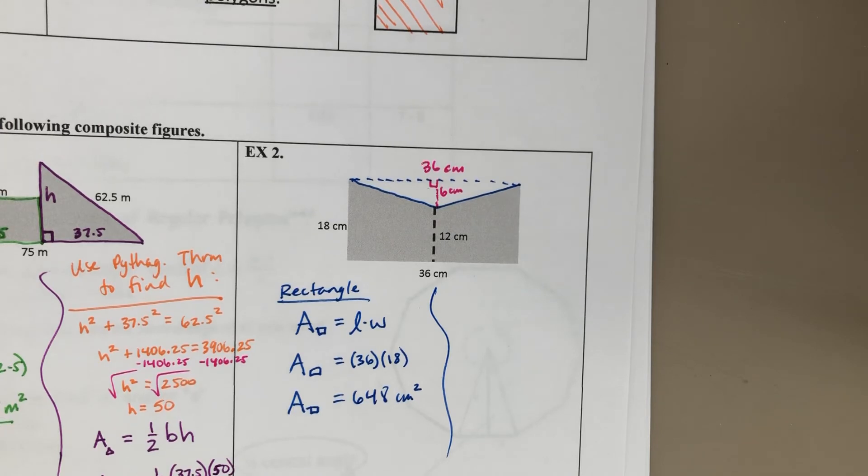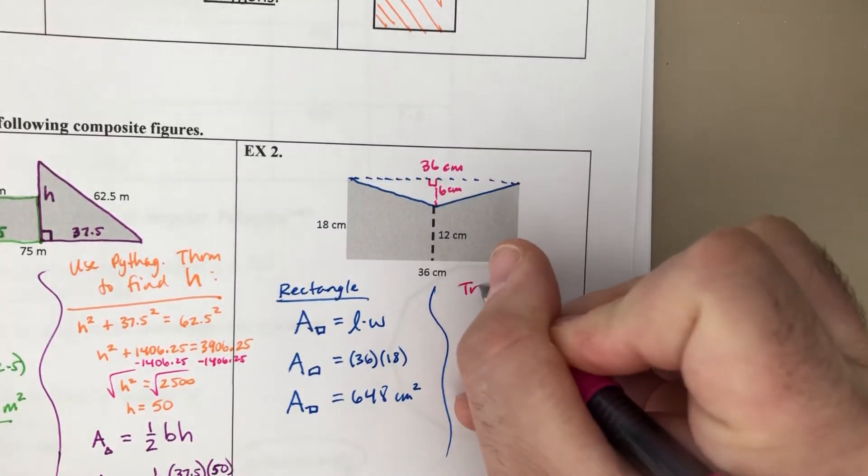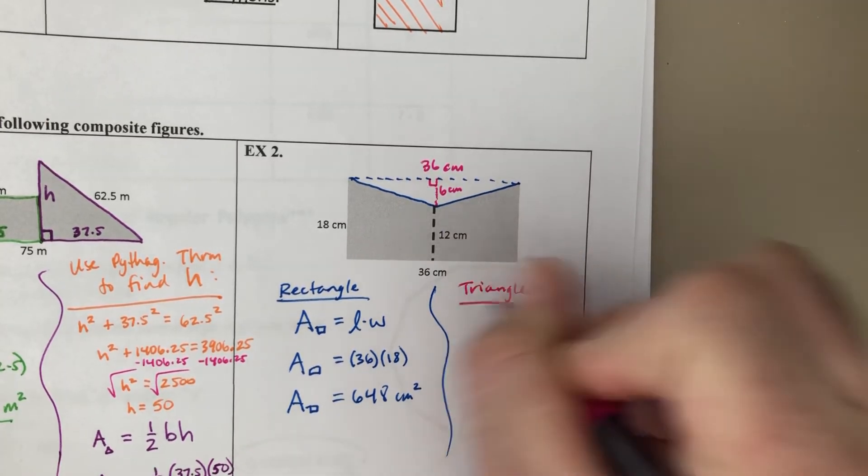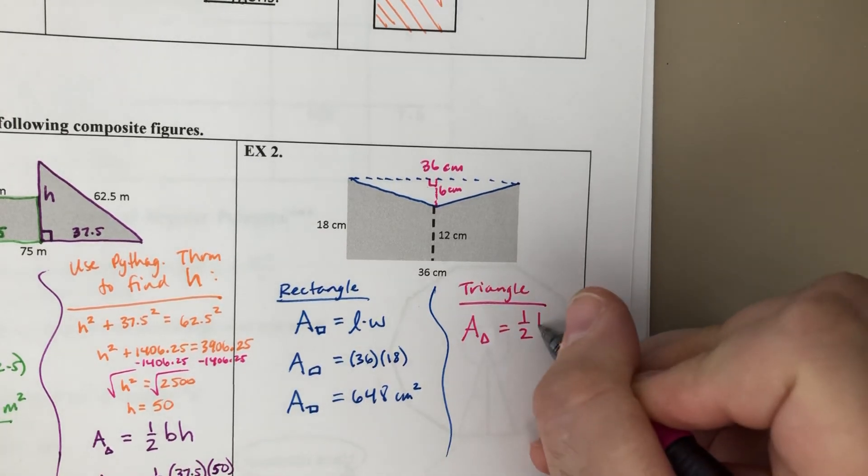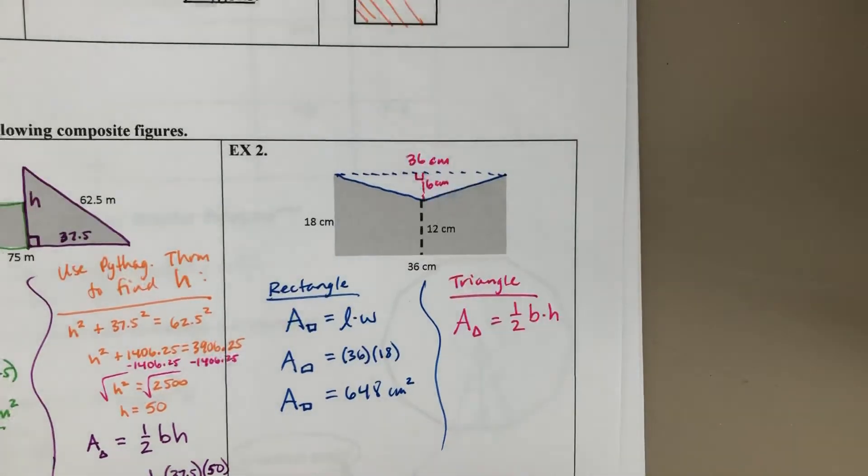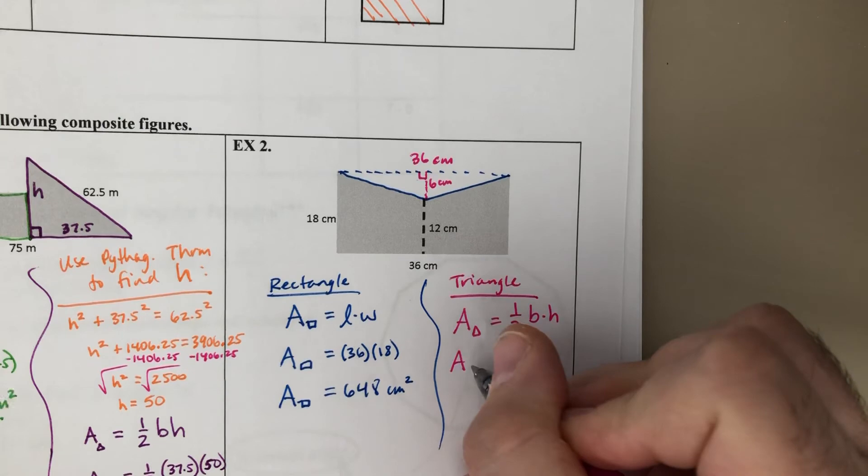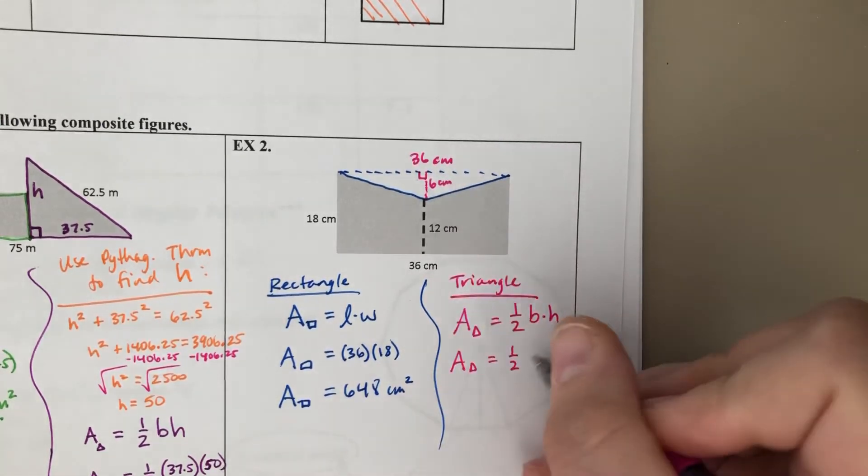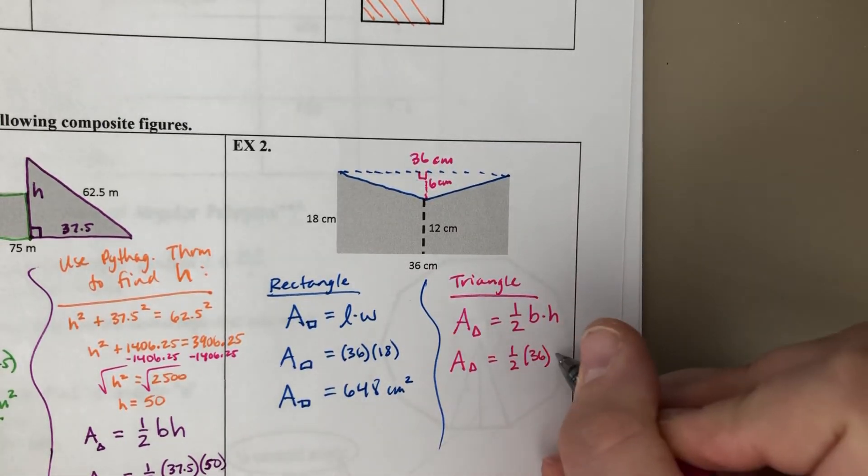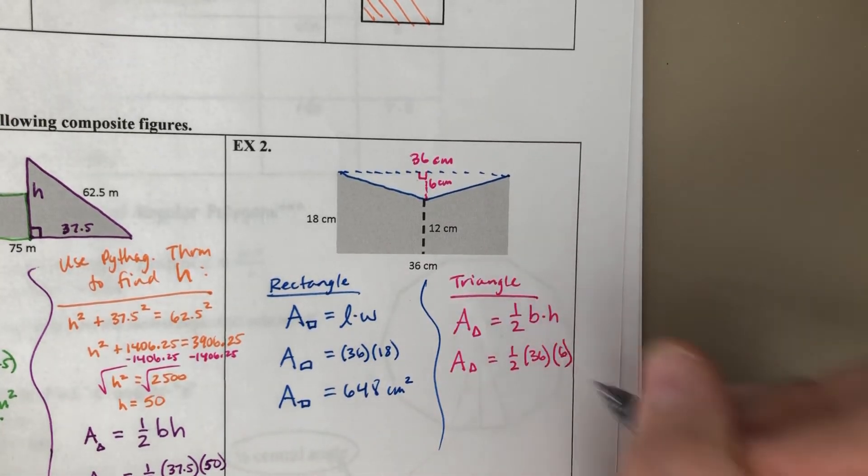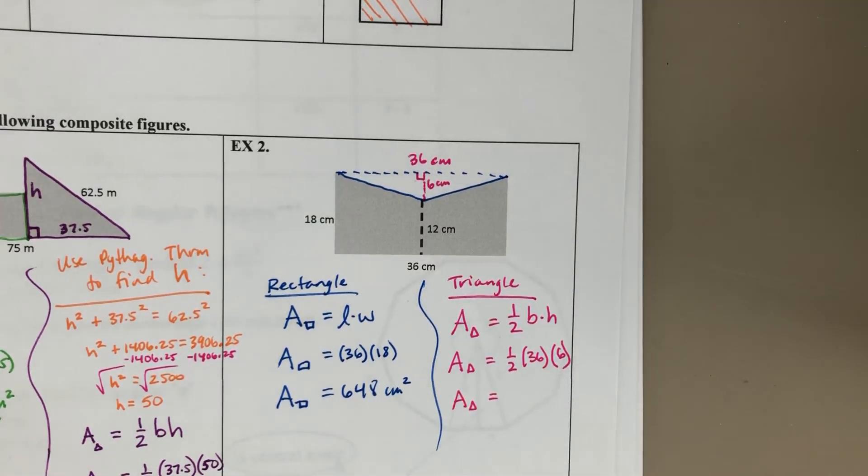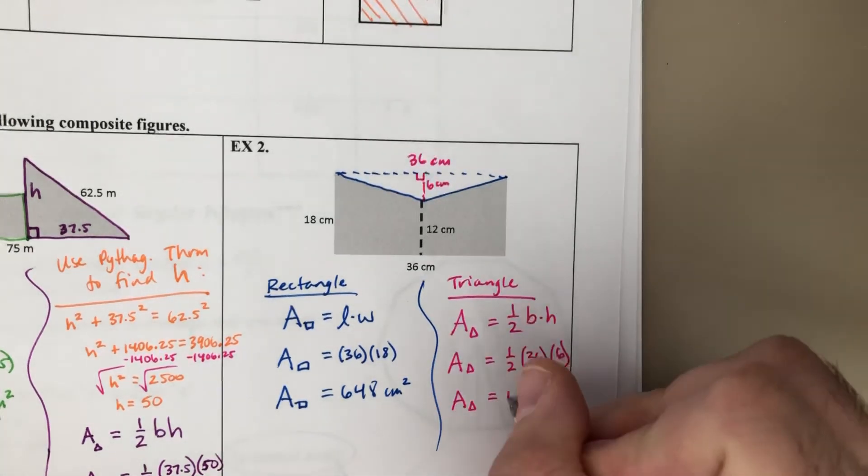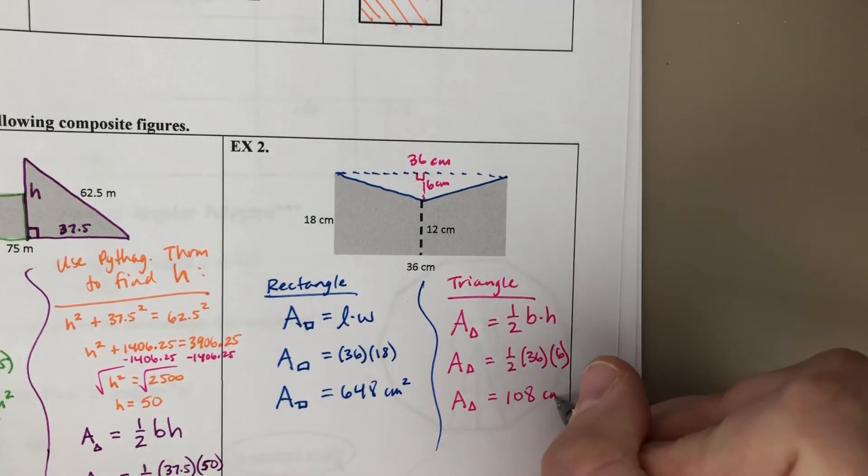The area for the triangle. Area of a triangle. The formula again, 1/2 base times height. And for that triangle, the base is 36, and the height is 6. 36 times 6 divided by 2 is 108 square centimeters.